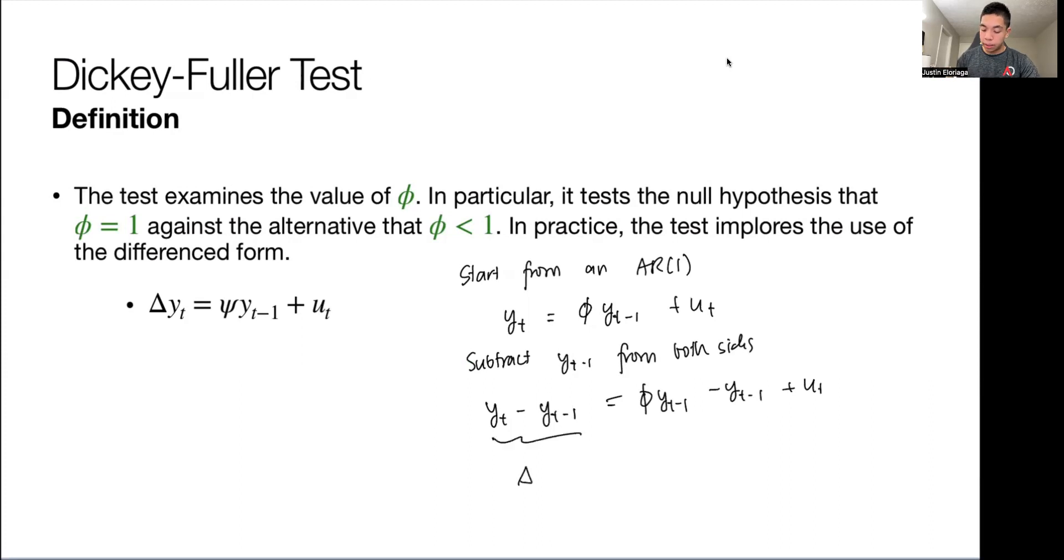Then I know that this is equal to delta Yt, which is the difference form. That's just Yt minus Yt minus 1. And I'm going to collect this, so that's factor phi minus 1, Yt minus 1 plus Ut. And I'm going to call this phi minus 1 as this psi. So basically, that yields me delta Yt is equal to psi Yt minus 1 plus Ut, which is what we have here. That's the working difference form that we're going to be using for this Dickey-Fuller test.